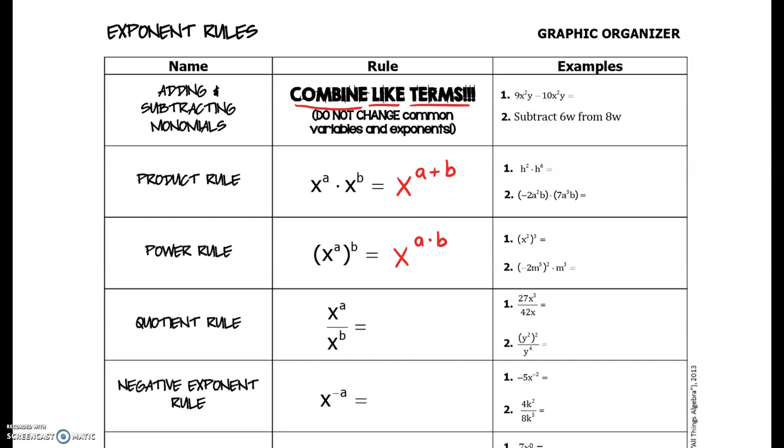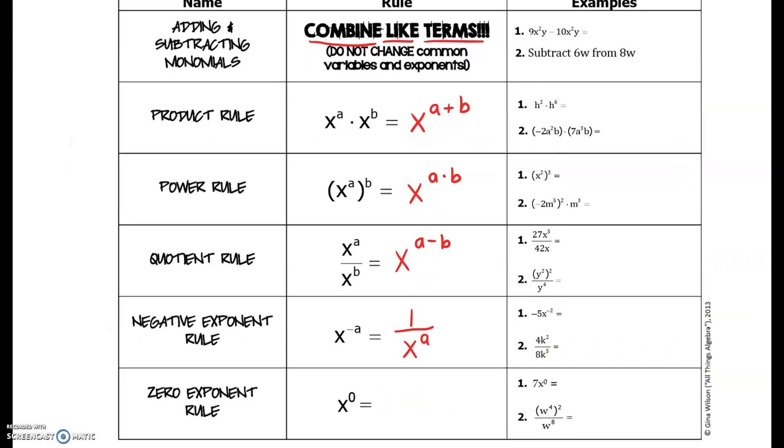The negative exponent rule, something new this week: if you have a negative exponent in your initial problem, in order to write your final answer, we have to remove it. And to do that we will turn this into a fraction. We will move the base along with the exponent to the bottom of the fraction, and when we do that, the exponent will turn positive.